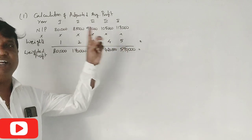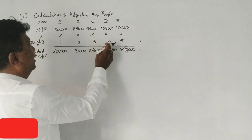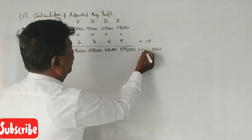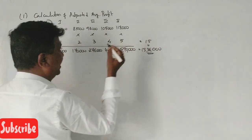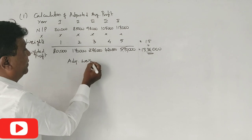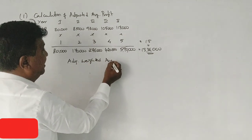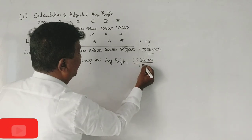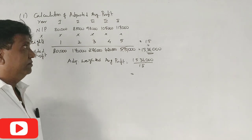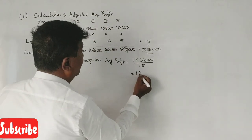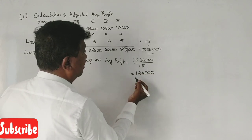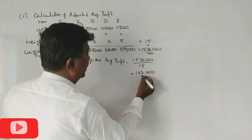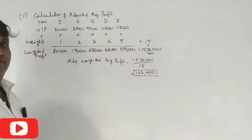Since profits are increasing, the sum of weights is 1+2+3+4+5 = 15. The total weighted profits come to 15,36,000. The adjusted weighted average profit is 15,36,000 ÷ 15 = 1,02,400.